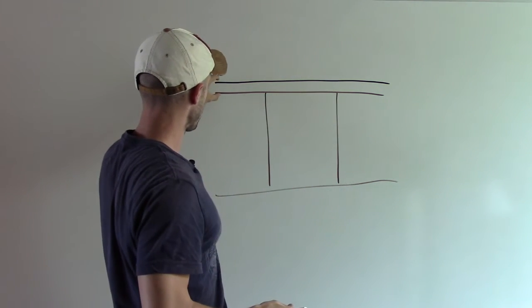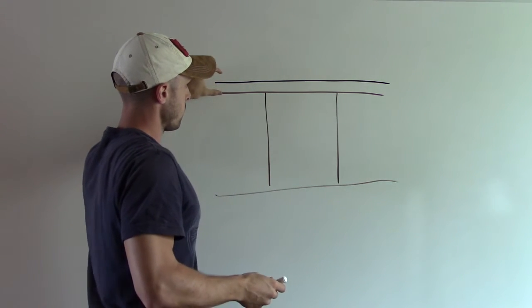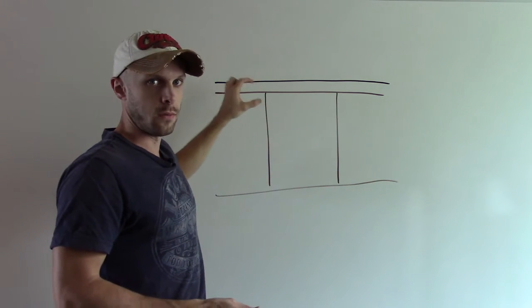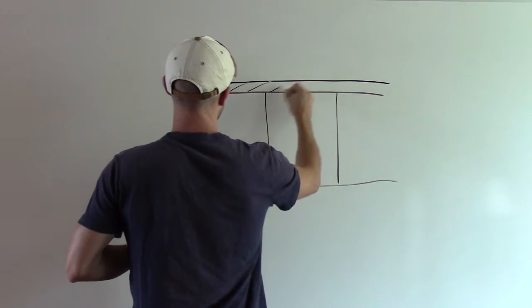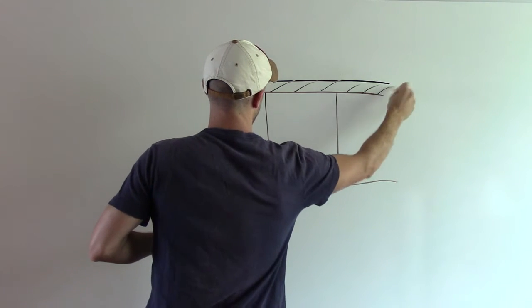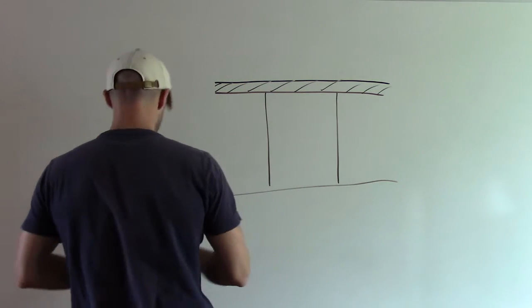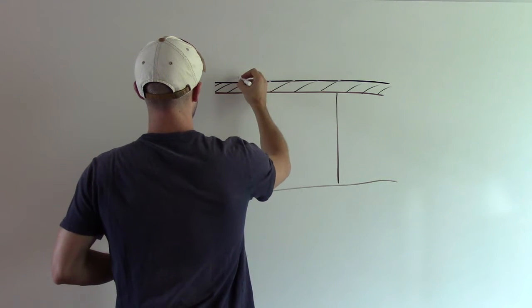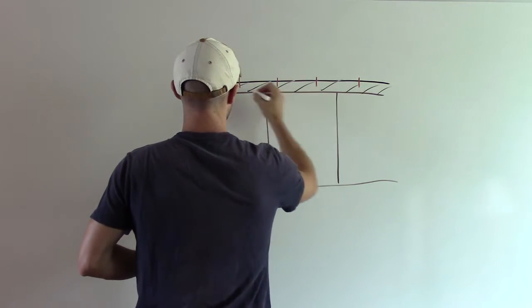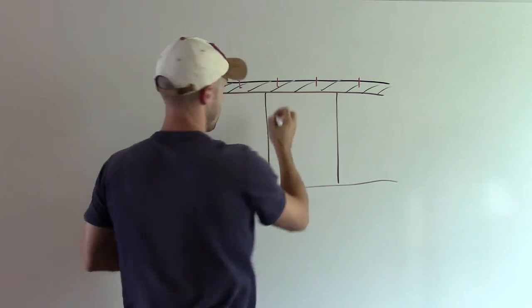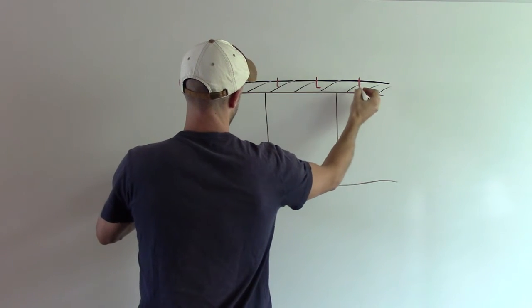You have this concrete bond beam and it holds the walls together, but it also gives you a way to attach your roof system to your walls. This is all concrete and what you do when it's wet is you insert your metal rods into the wet concrete and it dries. Usually they're J-bolts, they're like little L-shaped so they stay in there and can't be pulled out.